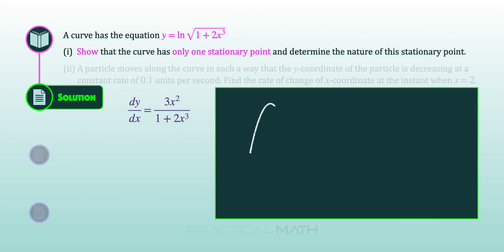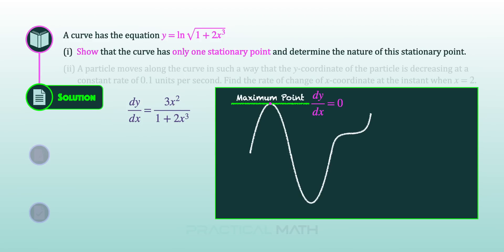With our derivative of y, let's discuss the three different stationary points and how the gradient dy/dx changes through them. For a maximum point, the tangent is parallel to the x-axis, so dy/dx equals 0. To the left of the maximum point, dy/dx is positive as the curve slopes upward, and to the right, dy/dx is negative as the curve slopes downward. So for any maximum point, dy/dx changes from positive to negative as x increases through the stationary point.